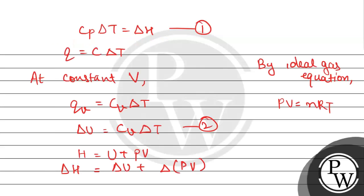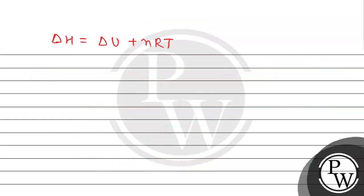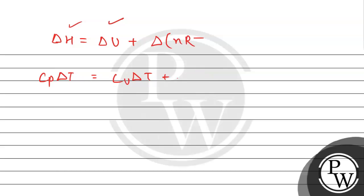Now we substitute the values of ΔH and ΔU into this equation. ΔH = Cp·ΔT and ΔU = Cv·ΔT. According to the given question, we are talking about 2 moles, so n = 2, making nRΔT equal to 2R·ΔT. Cancelling ΔT from both sides gives Cp = Cv + 2R, or Cp − Cv = 2R. This is our final relationship.